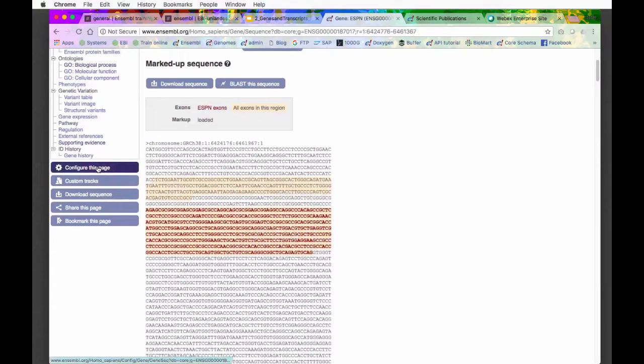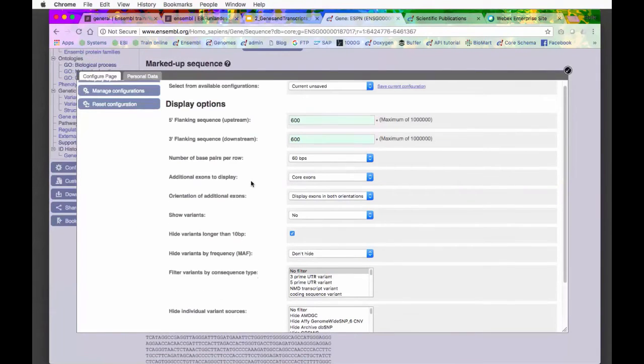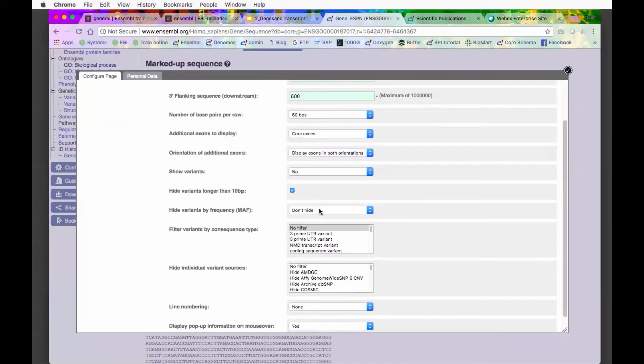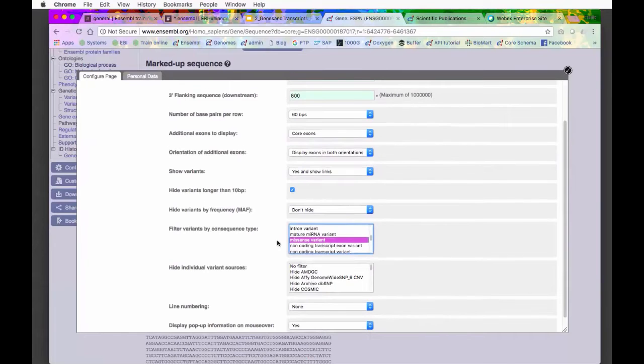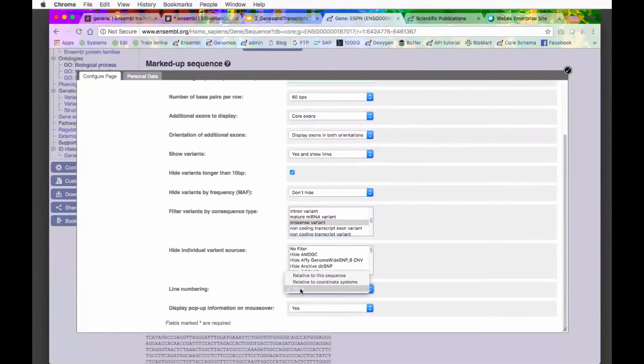Just like with the region view, I can configure the page. If I go into configure this page, I can do things like show variants. I'm going to show variants, yes and show links. I'm just going to pick missense variant only. I'm also going to add line numbering relative to this sequence.